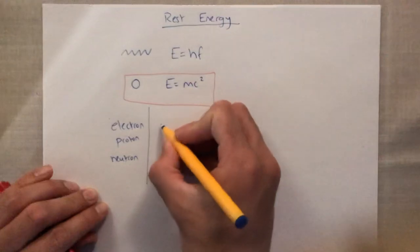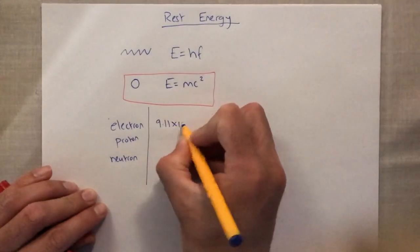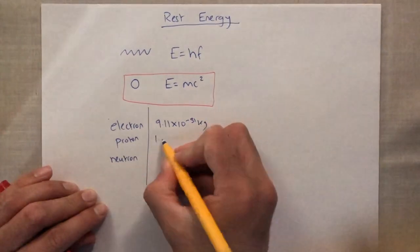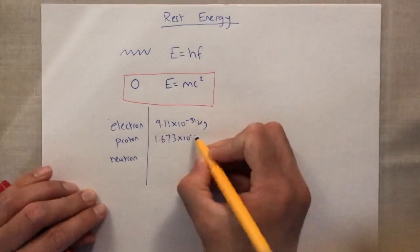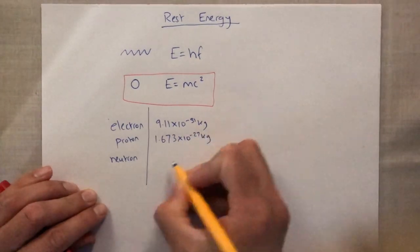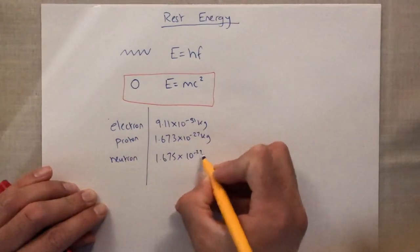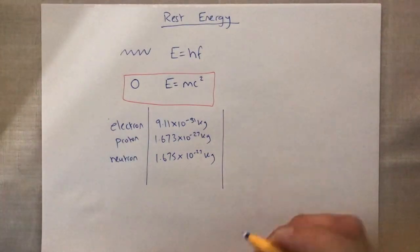We know the masses of all of these particles. We know the mass of an electron is 9.11 times by 10 to the minus 31 kilograms. For a proton, it's 1.673 times by 10 to the minus 27 kilograms. And for a neutron, it's 1.675 times by 10 to the minus 27 kilograms.